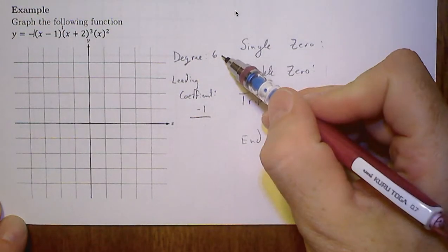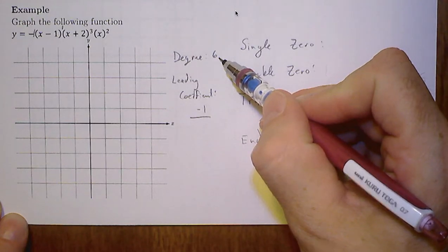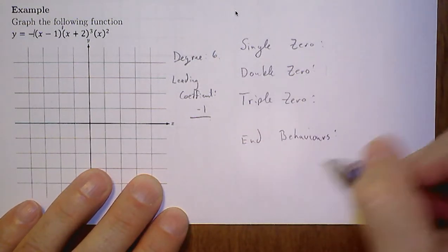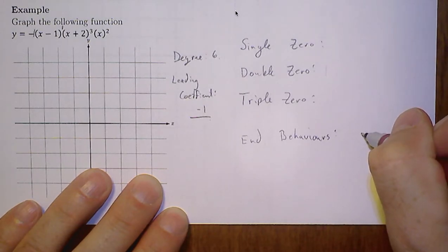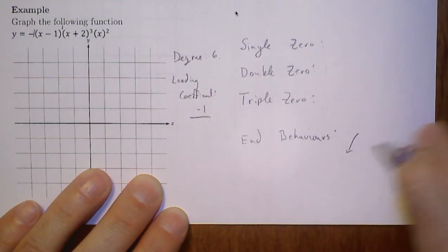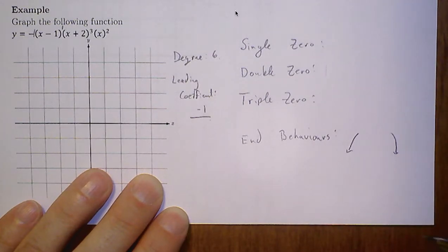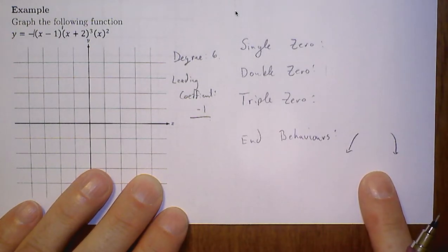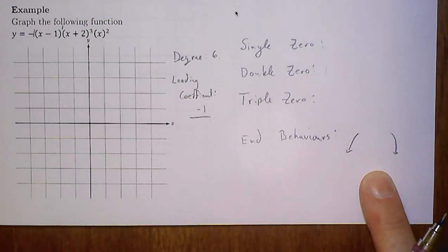If we have a six degree equation, and our leading coefficient is negative 1, it means that our end behaviors are going to be overall, an even degree has the same behaviors as a parabola. When that leading coefficient is negative, it overall opens downwards.